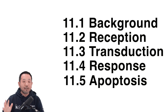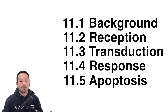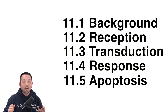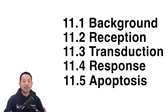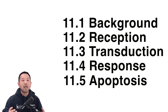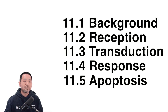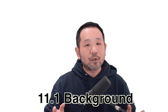Chapter 11 has five parts: 11.1, 2, 3, 4, and 5. Section 11.1 is going to talk about the generalities of communication systems within cells. Chapters 11.2, 3, and 4 are going to focus on the three main steps involved in the communication pathways, and 11.5 is going to deal with apoptosis, or programmed cell death, which loosely connects to the ideas presented in the previous sections.